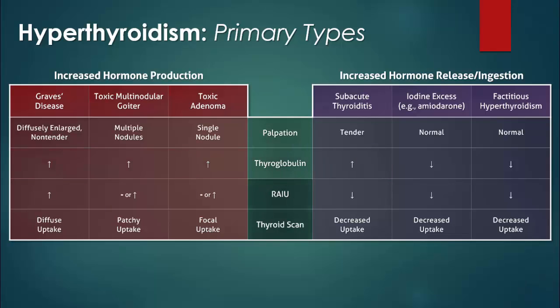Decreased radioiodine uptake indicates increased hormone release or ingestion. The pattern of increased iodine uptake is diffuse with Graves' disease, patchy with toxic multinodular goiter, and focal with toxic adenoma.